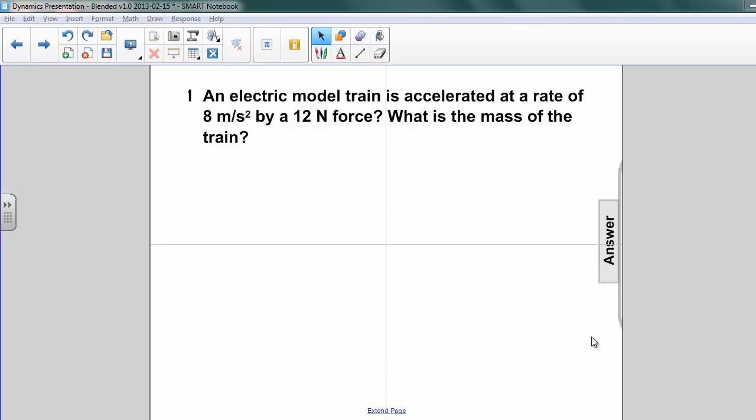Here's another problem we hope you've tried. This one's number 11 in the notebook. An electric model train is accelerated at a rate of 8 meters per second squared by a 12-newton force. What is the mass of the train?